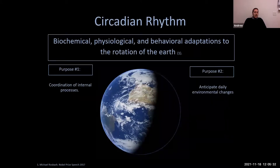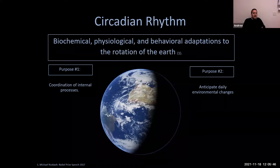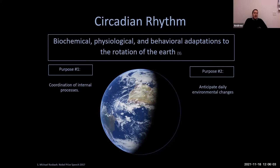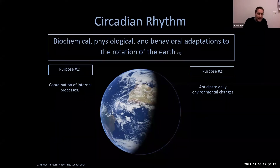We live on a planet that rotates on its axis every 24 hours, creating cyclic environmental changes — most notably a light phase and a dark phase we've labeled day and night. This cycle of light and darkness has been occurring for billions of years with unwavering consistency. Through evolution, life has learned to adapt to this cycle to optimize biologic processes. We call these biochemical, physiological, and behavioral adaptations the circadian rhythm — from the Latin roots circa and diem, meaning about a day.